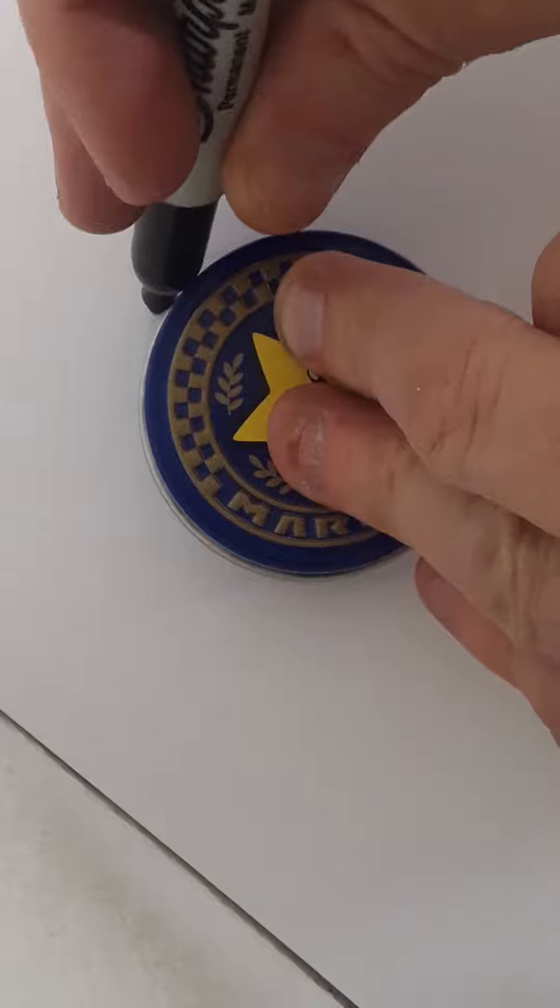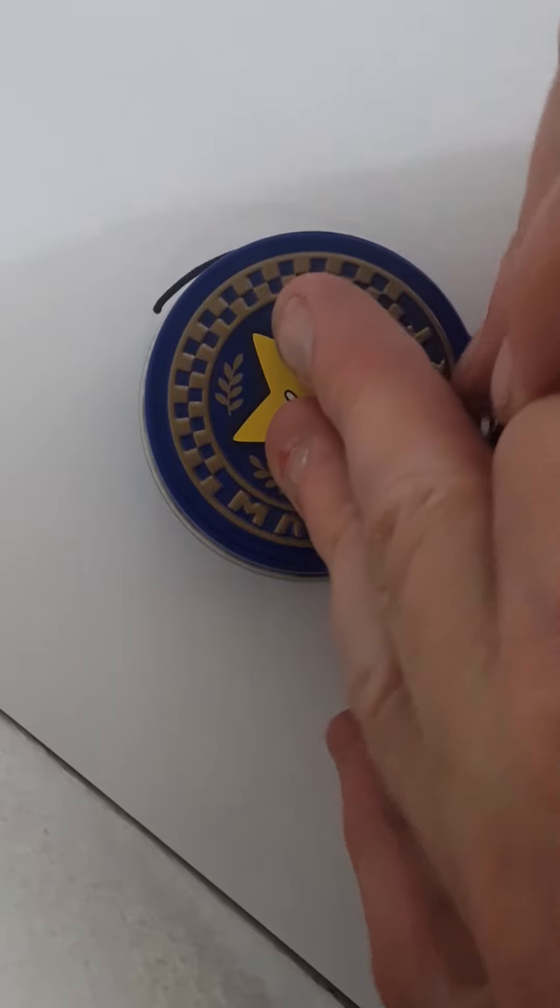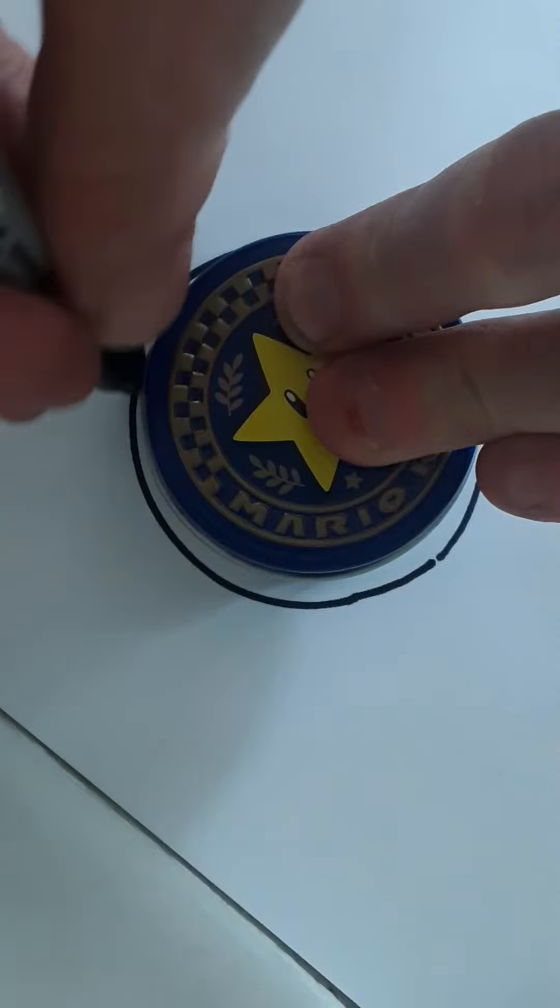So first you take a circular object and draw a circle around it. Use something circular to make a nice circle.